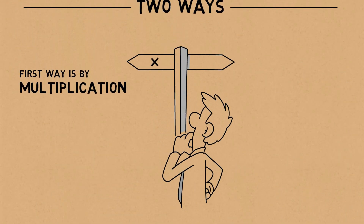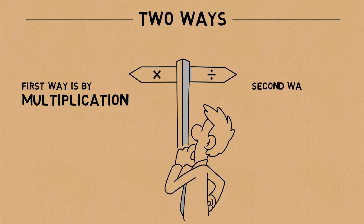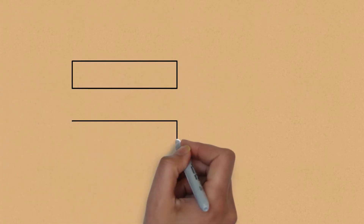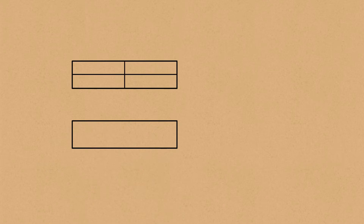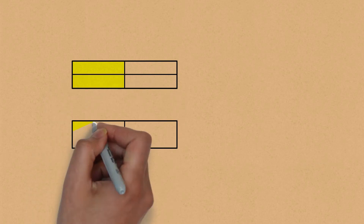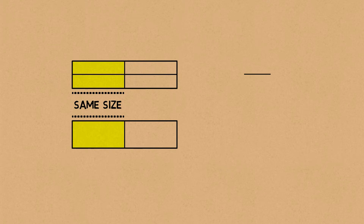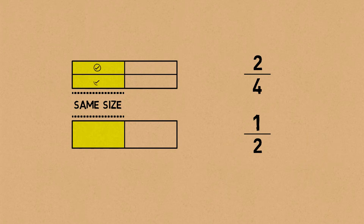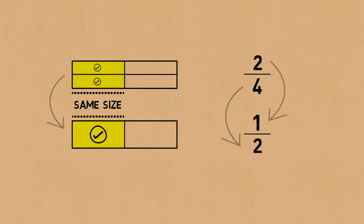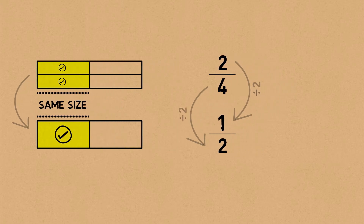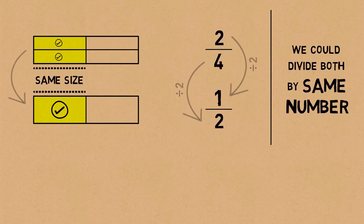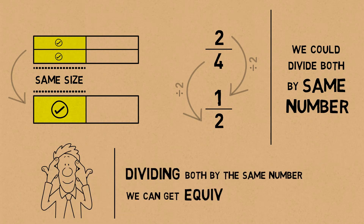Now let's look at the other method we can use to find equivalent fractions. This method is to divide — to divide the denominator and the numerator. Using two bar models again and shading the same size, we've got two quarters here and one half here. Do you see that two pieces have been stuck together into one piece? That means we have divided both the denominator and the numerator by two: two divided by two is one, and four divided by two is two. So we can divide the denominator and the numerator by the same number to get an equivalent fraction as well.